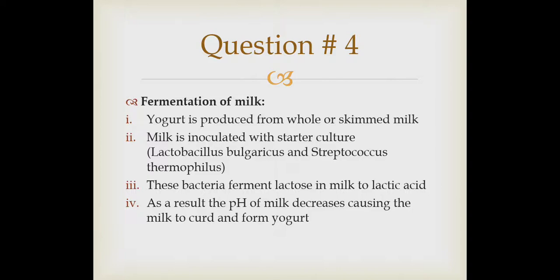Question number four is the fermentation of milk by bacteria. Yogurt is produced from whole or skim milk. When yogurt is formed, the milk is first inoculated with a starter culture — some bacteria — which mostly contains Lactobacillus bulgaricus and Streptococcus thermophilus. These two bacteria are mostly used for this process. The milk is inoculated with this bacterial culture, then these bacteria ferment the lactose in the milk to lactic acid. Lactose is the milk sugar — the carbohydrate naturally present in milk. The bacteria convert this lactose into lactic acid, which causes acid to form inside the milk, decreasing the pH. As a result, the milk proteins start coagulating, causing the milk to curd and form yogurt.